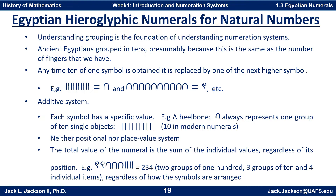For example, the heel bone symbol always represents ten in our modern numerals, regardless of its position. Since it's not a place value system, it is not really correct to say it is a base ten system, even though the groupings are certainly in groups of ten. So this is neither positional nor place value.